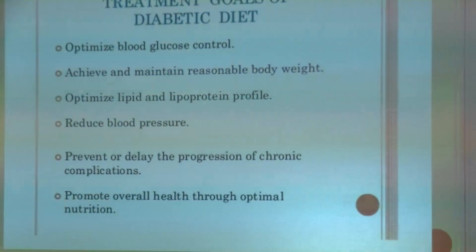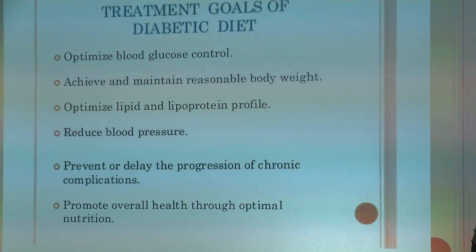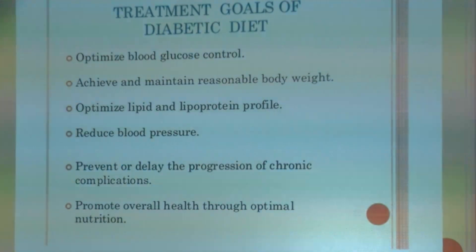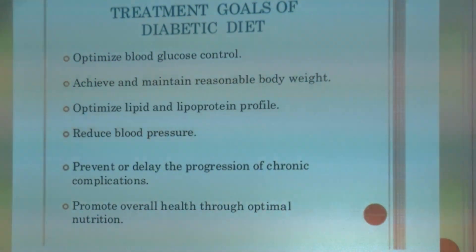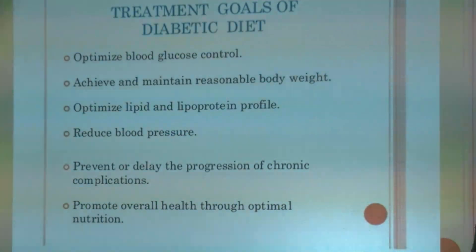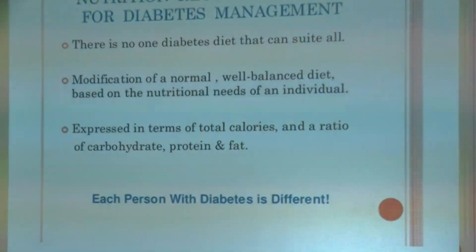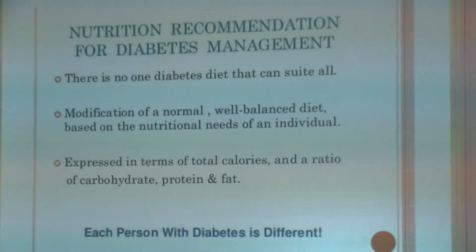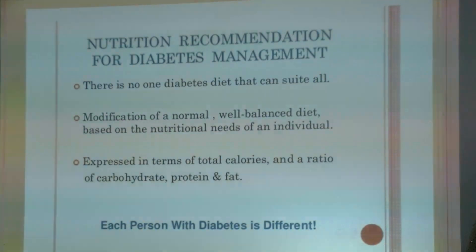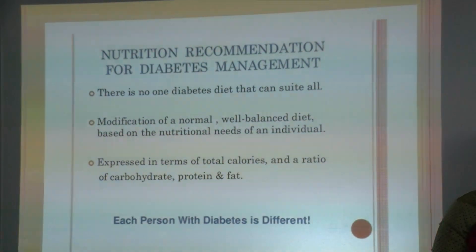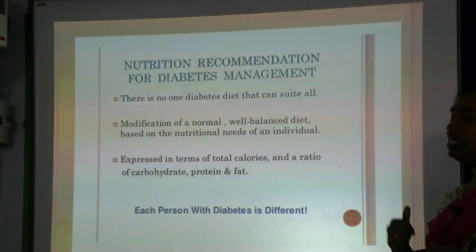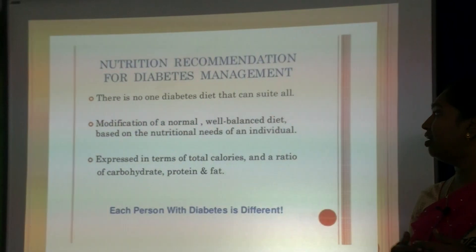The treatment goals include: optimizing glucose control to achieve and maintain reasonable body weight, optimizing the lipid and lipoprotein profile, reducing blood pressure to prevent or delay chronic complications, and promoting overall health through optimal nutrition. There is no single diabetes diet that suits all; modification of a normal, well-balanced diet is needed based on individual nutritional needs, expressed in terms of calorie, fat and protein.